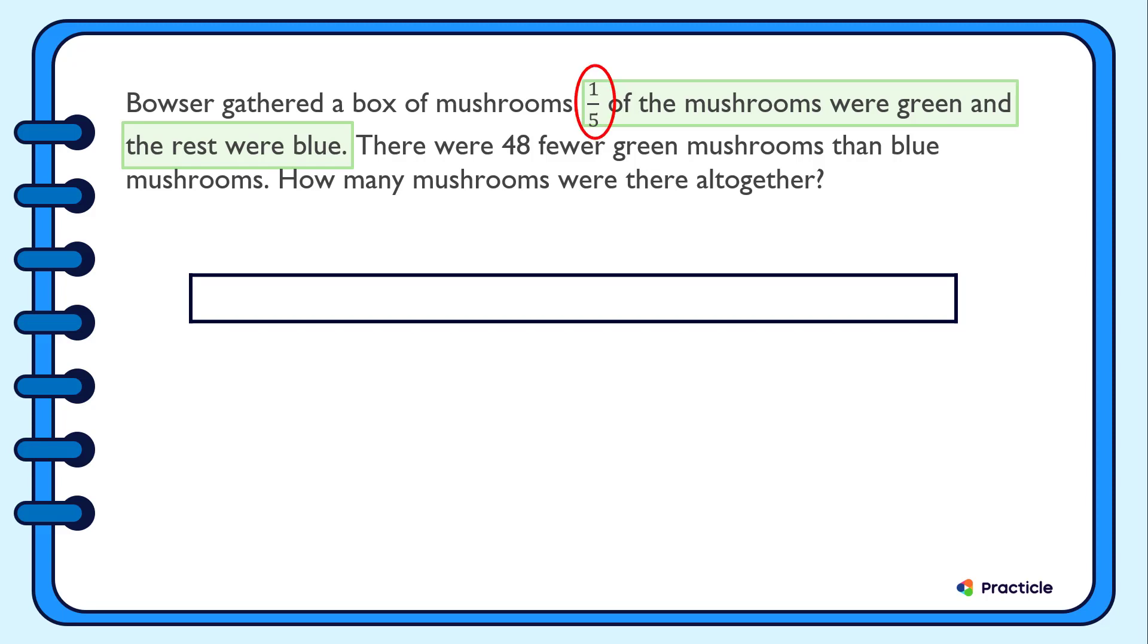This means that if we were to divide all the mushrooms that Bowser gathered into five equal parts, one of these parts will stand for the green mushrooms. Let's call this one unit.